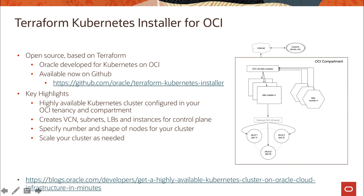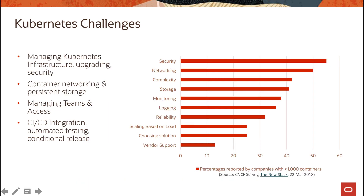The Terraform installer also creates all prerequisite infrastructure components — the Virtual Cloud Network, subnets, load balancers, and everything else. Just like discussed, you can specify the number and shapes of your cluster nodes. It also lets you scale your cluster: within the TF variable file, you define the total number of nodes and it scales the cluster as needed.